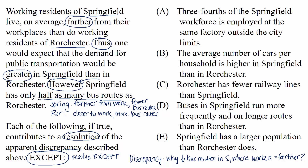Choice A: three-fourths of the Springfield workforce is employed at the same factory outside the city limits. What's the impact of this information? Well, it helps shed light on the situation. If such a high proportion of people work in the same factory outside city limits, then they could potentially take the same bus line to the factory, which would necessitate fewer bus routes. So remember, in this question, we're eliminating choices that contribute to a resolution.